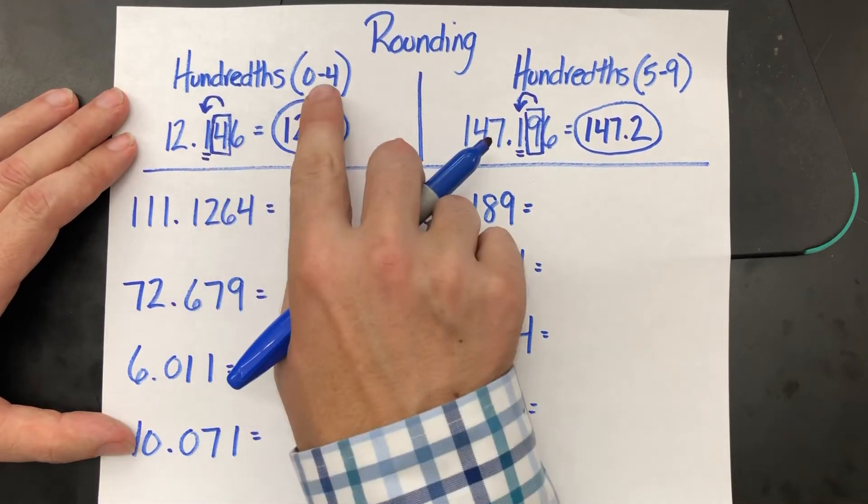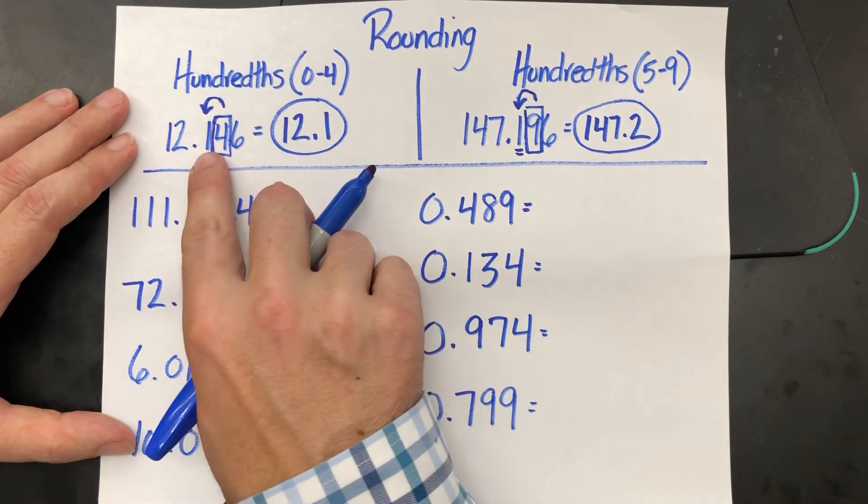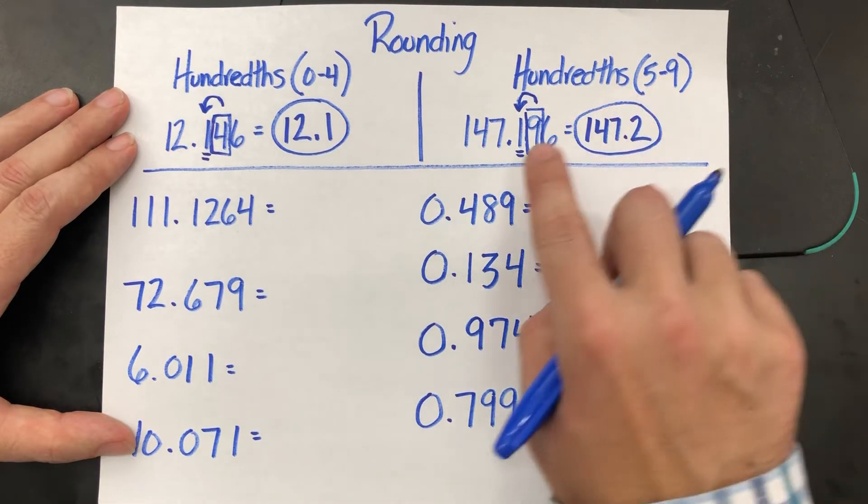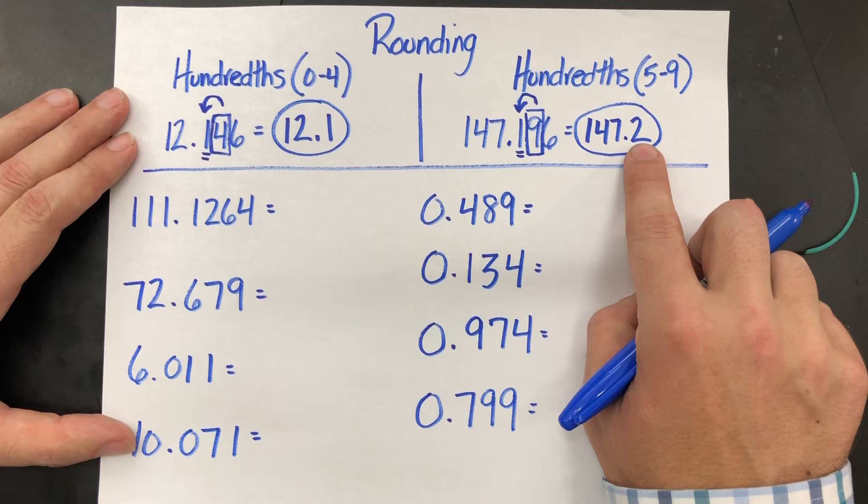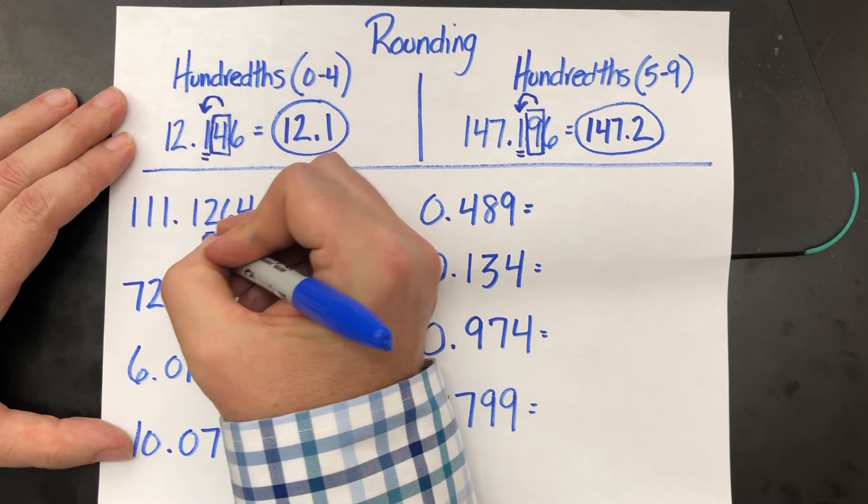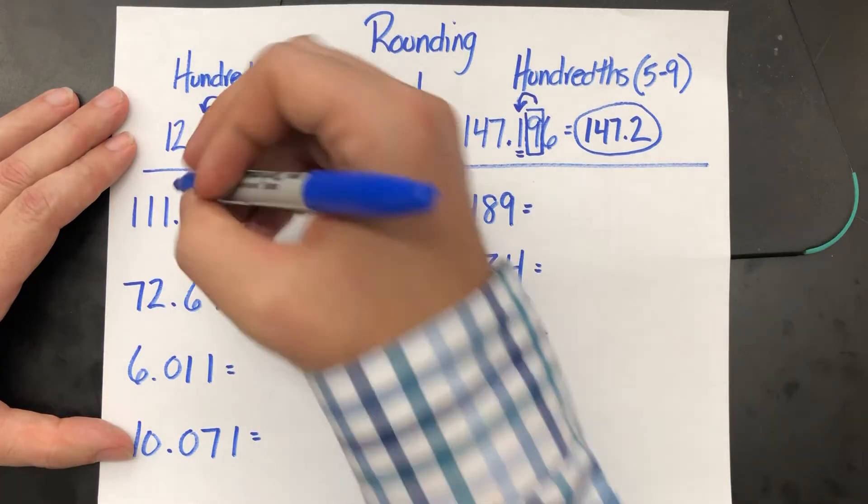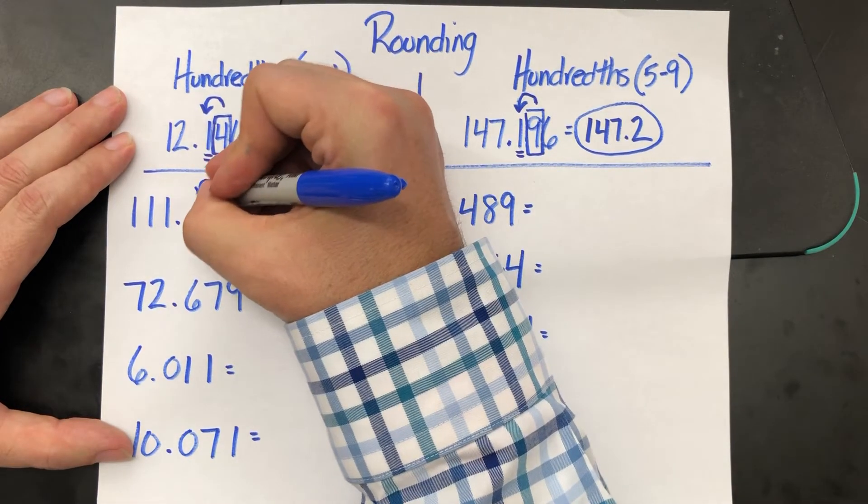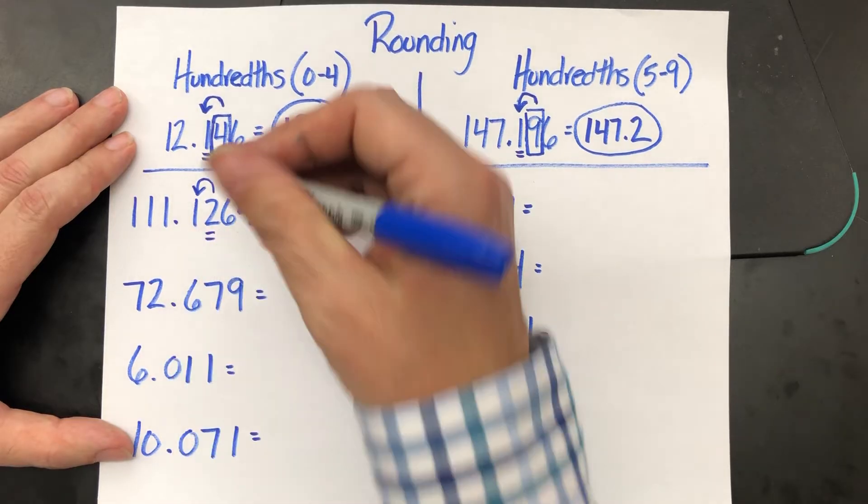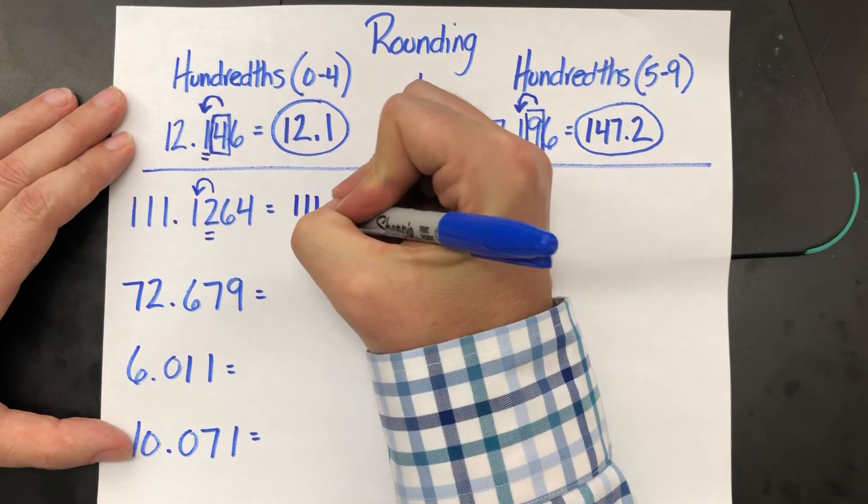If that hundredth spot's between zero and four, you leave the tenths alone. If that hundredth is between five and nine, you take that tenths, bump it up one value. One eleven point one two six four. That two in the hundredths place is between zero and four. You leave the one alone in the tenths. One one one point one.